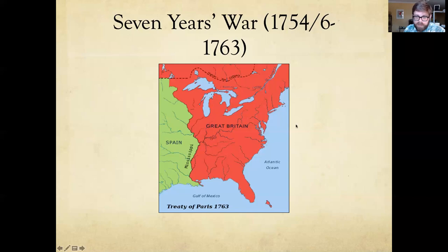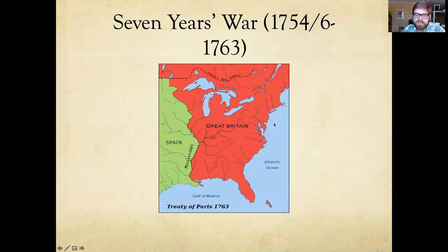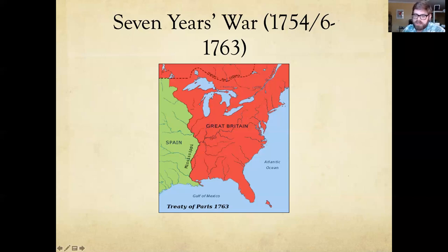This is a map of 1763. At that point, Great Britain, at least relative to other European powers, has gained a claim to all of what will become the United States east of the Mississippi River, as well as most of what is Canada. But if we looked at that map in 1750, you would see the British along the Atlantic coast and some of the Gulf Coast, and you would see the French controlling most of the interior area.